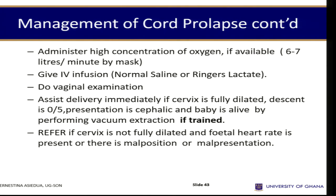Give IV infusion of normal saline or Ringer's lactate. Do vaginal examination. If delivery is not imminent once the cord is out, perform caesarean section. If delivery is close — full dilatation, good descent — perform bilateral episiotomy and vacuum extraction to bring out the baby. If cord pulsations are absent, check for signs of obstruction such as cervical oedema, caput, or moulding. If there is obstruction, give broad-spectrum antibiotics. If no obstruction and presentation is favourable, allow normal delivery.